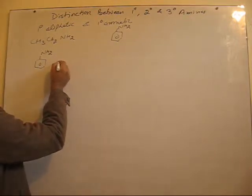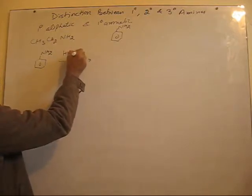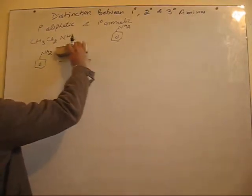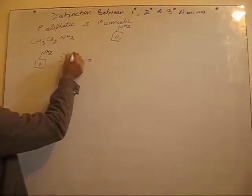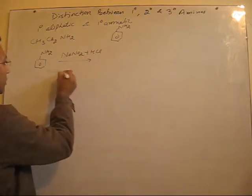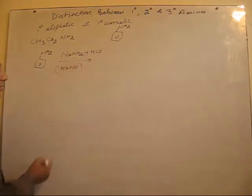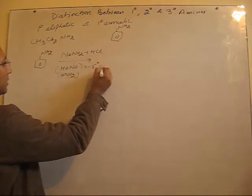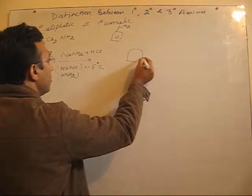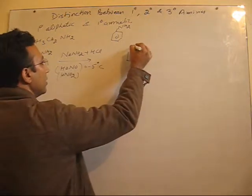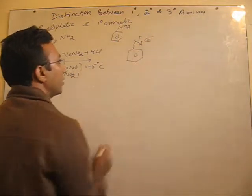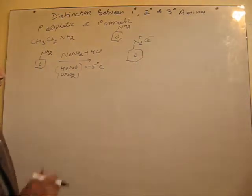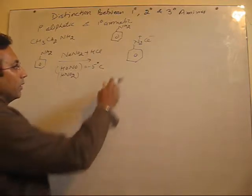For example, if we treat aniline with sodium nitrite and HCl, this mixture gives nitrous acid (HNO₂). At a temperature of 0–5°C, aniline gives rise to a special compound — diazonium salts. The compound formed is benzene diazonium chloride, which is the most important compound in the synthesis of aromatic compounds.